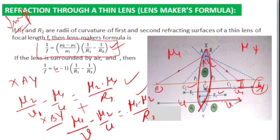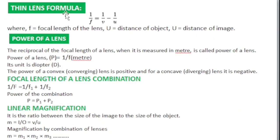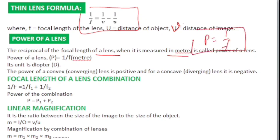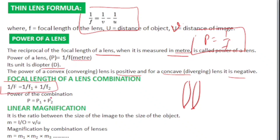The thin lens formula is 1/f = 1/v − 1/u, where u is object distance, v is image distance, and f is focal length. Power of a lens is the reciprocal of focal length measured in meters: P = 1/f. The unit of power is diopter. Power of a convex lens is positive and of a concave lens is negative. For a combination of two lenses with focal lengths f₁ and f₂: 1/f = 1/f₁ + 1/f₂, and the combined power P = P₁ + P₂.